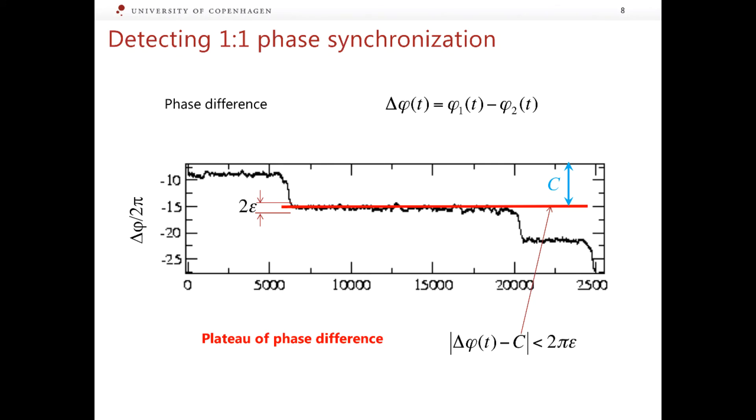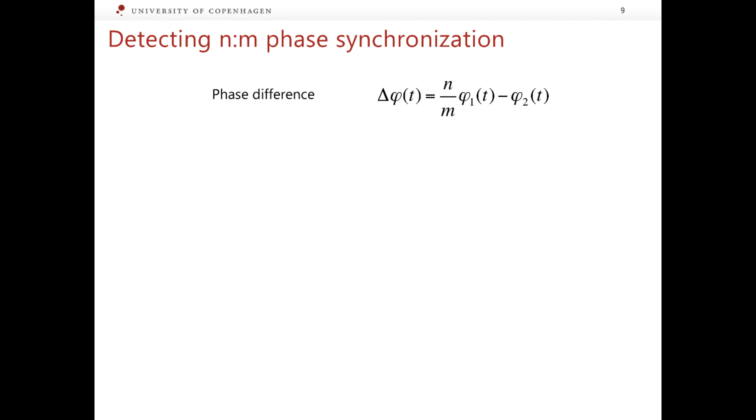To detect synchronization of a different order, we can still use the phases of interacting systems. However, the phase difference needs to be constructed with account of the suspected order of synchronization, which is the ratio of two integer numbers N and M. Namely, we take the phase of the first system and multiply it by N over M and then subtract the phase of the second system.